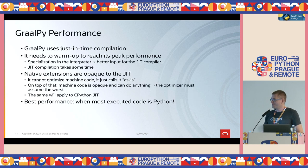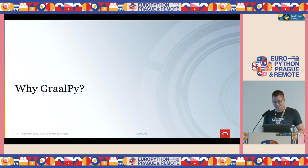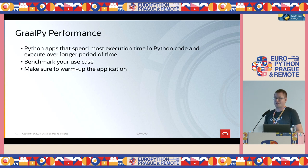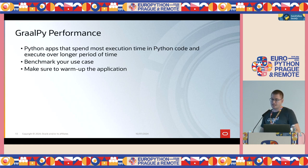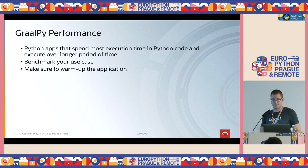You get the best performance with GraalPy when most of your code is Python — which is great, because we're at this conference because we like Python, not C++ or Rust. So why GraalPy? Because of the performance, but it depends. You need to benchmark your use case and see if it can be faster. If most of the time is spent in Python code, GraalPy can provide great improvement. When you benchmark, make sure to warm up the application, since GraalPy needs some time to warm up.